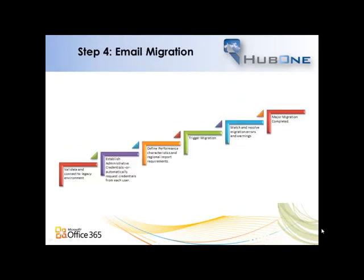To migrate the customer to Office 365, the first thing we do is get information on the legacy environment. We validate and connect to it, then we establish administrative credentials — we don't actually need them; we can get the users to log into a secure site to give us their credentials for migration. Once we have that, we define some performance characteristics, for example how many simultaneous migrations can we do. We trigger the migration and we watch and resolve migration errors and warnings. When we've done that, the major migration is complete — the users are in Office 365 and the domain is working, and they have all their email, calendars, contacts and tasks.